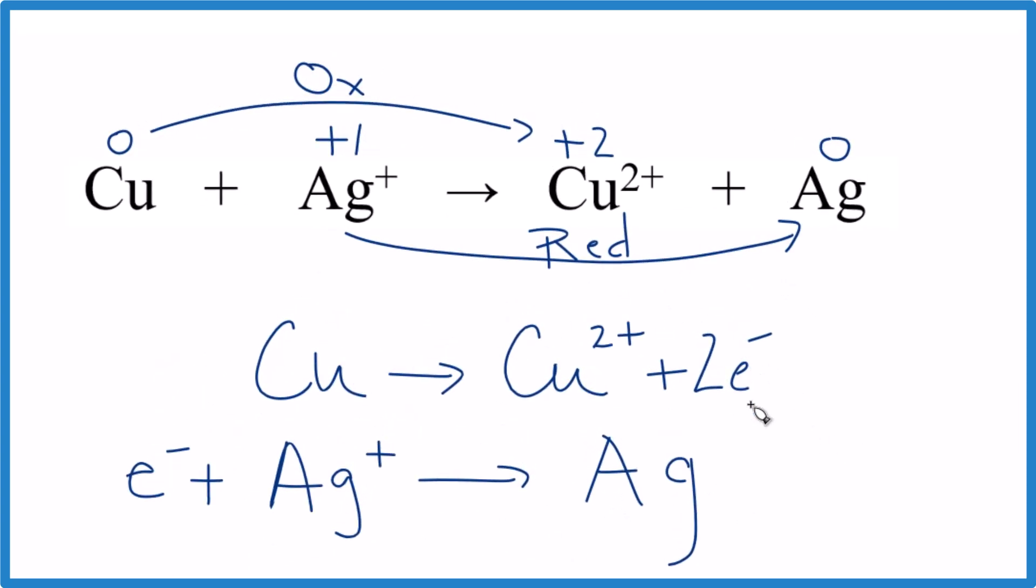So what we can do, we have two electrons here. We could take and then multiply this entire half reaction by two. Then we have two electrons here, two here, and we'd be good. So let's do that, and that'll give us the balanced redox reaction.